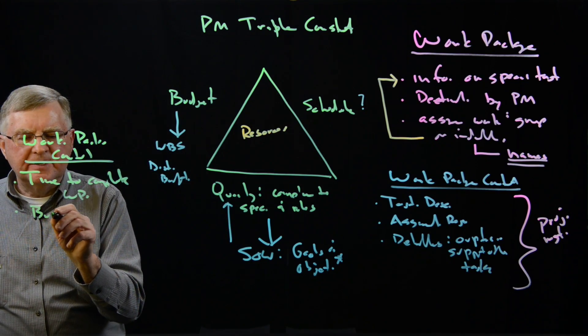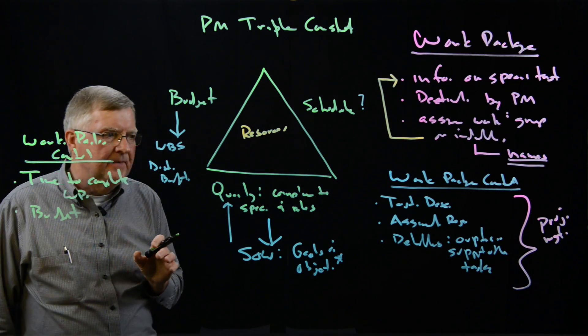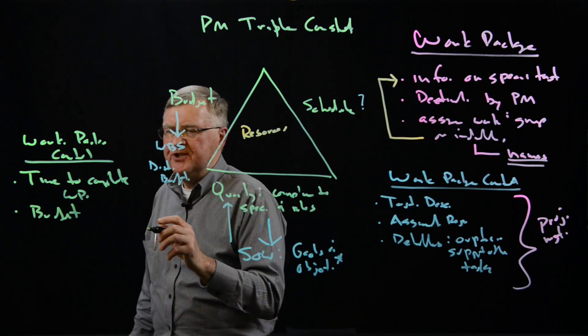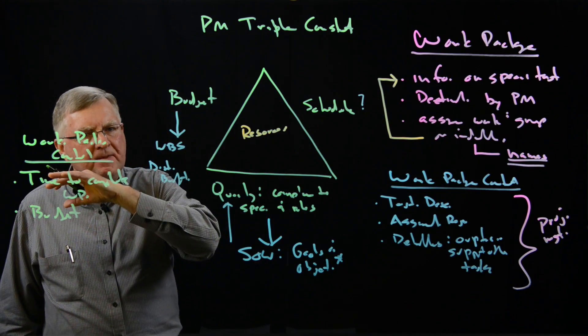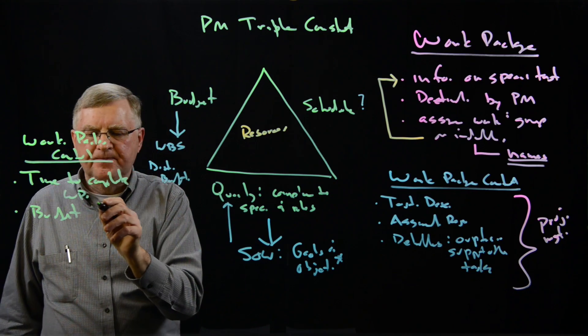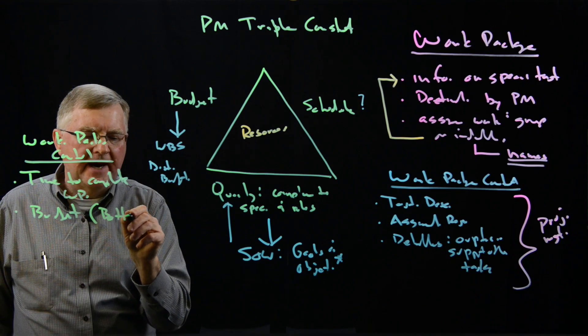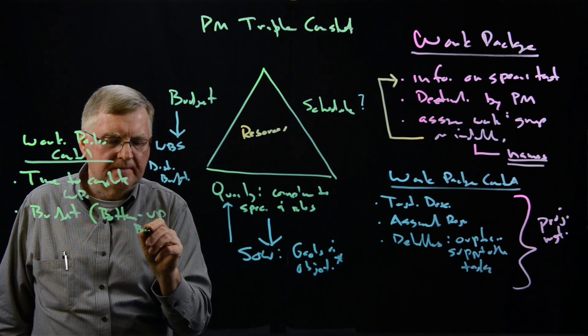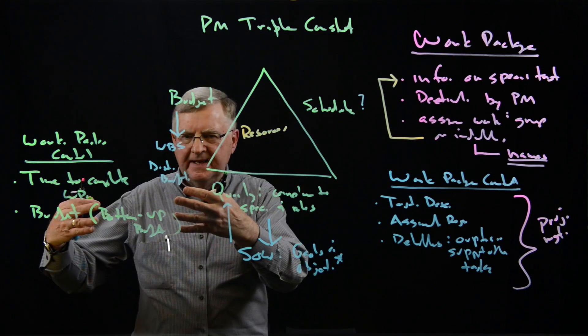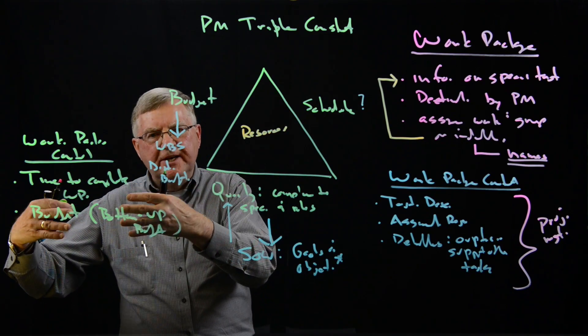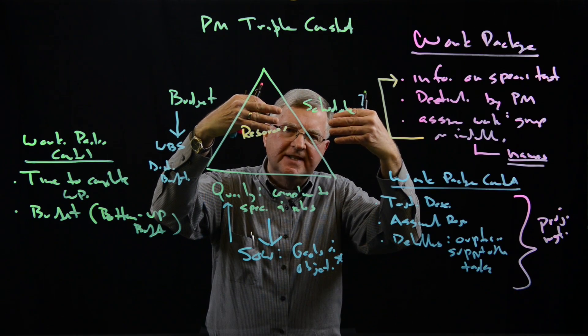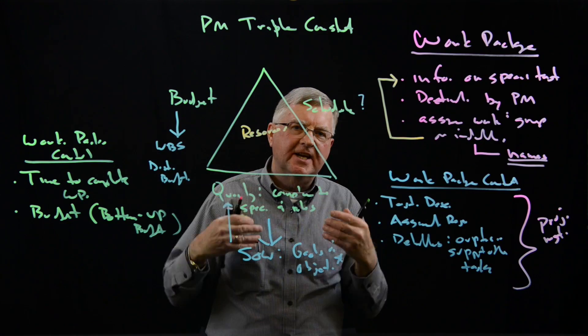We need to know the budget. What's the amount of funding that we need to complete that package? Now, earlier, in the work breakdown structure, we looked at top-down budgeting. This is bottom-up budgeting. Namely, the project manager will take the individual budget requests from all the tasks, add them up, and then see that this is the budget that's actually needed.